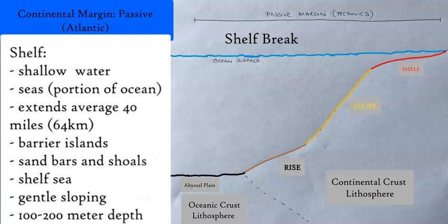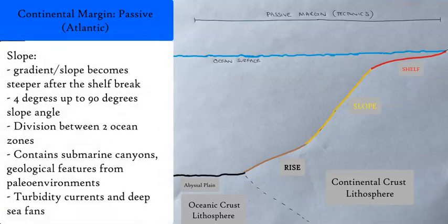The continental shelf turns into the continental slope, which is that sharp increase in degrees, dropping down deeper into the ocean quickly over a short distance. It can range from two to five degrees in the Atlantic.